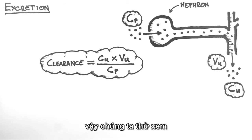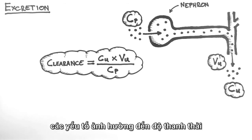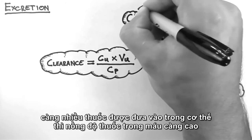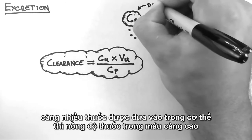So let's look at the factors which affect these values. The concentration in the plasma is primarily related to the dose of the drug being given. The more drug, the higher the concentration in the plasma.